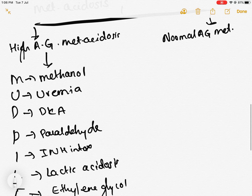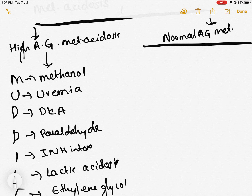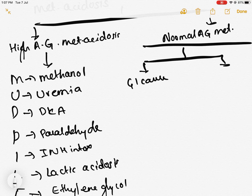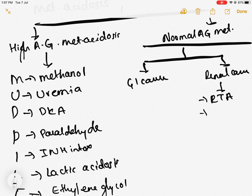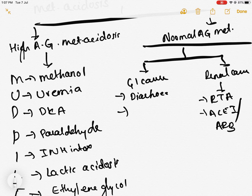E stands for Ethylene glycol and S stands for Salicylate. For normal anion gap metabolic acidosis, the anion gap is normal — 10 to 14 is considered normal. Normal anion gap metabolic acidosis is of two types: GI cause and renal cause. Renal cause is renal tubular acidosis — type 1, type 2, and type 4 are all normal anion gap. Other renal causes include acute kidney injury caused by ACE inhibitor or ARB. GI causes include diarrhea and GI bypass surgery.